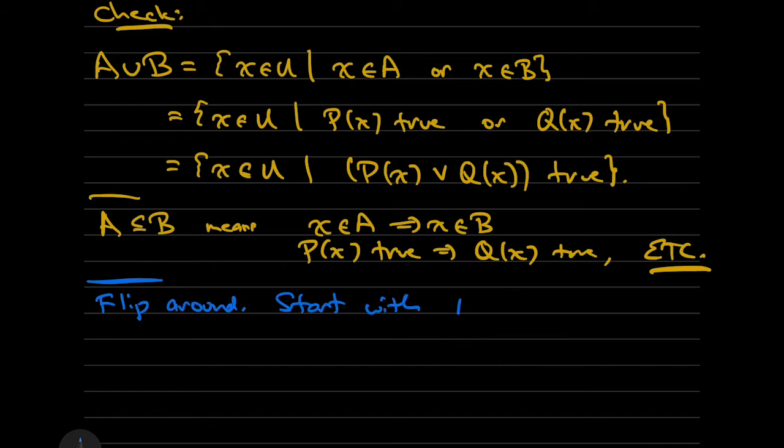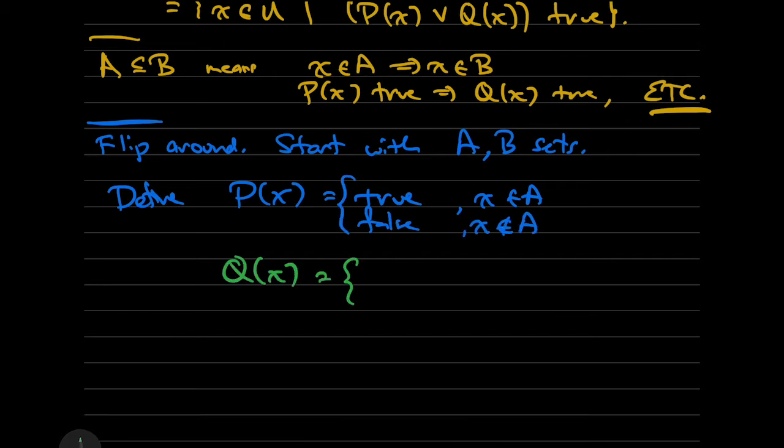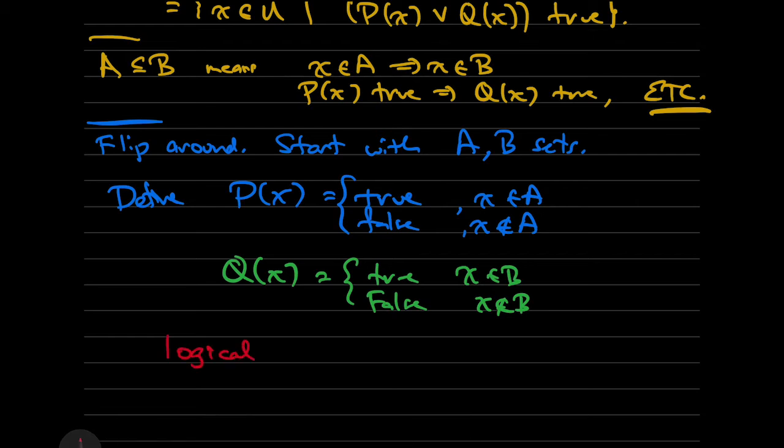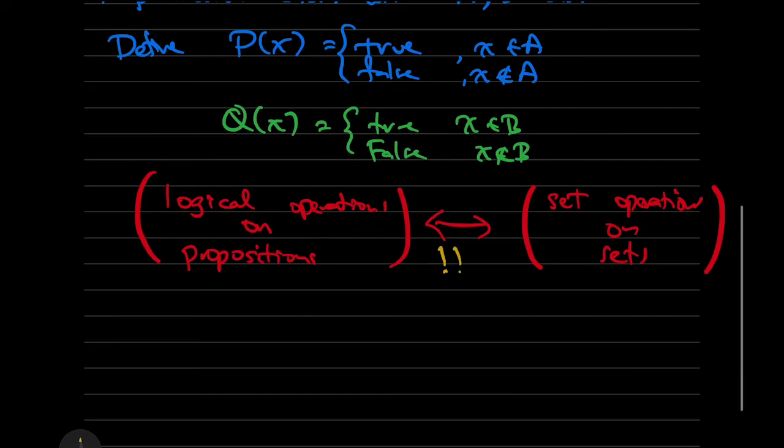We can flip all this around, though. Imagine that we start with any two sets A and B inside a universal set U. Now we can define P and Q in terms of A and B. We can define P of X to be true if X is in A and false if X is not in A, and the same sort of thing for Q. If X is in B, we say Q is true. If X is not in B, we say Q is false. From this, any operation on logical propositions can be translated to an operation on sets and vice versa. We can go back and forth however we like, whenever it's convenient.